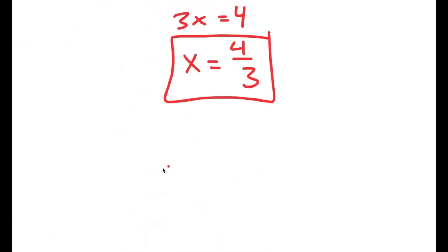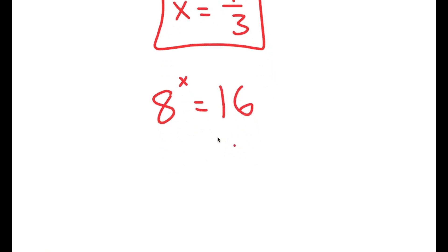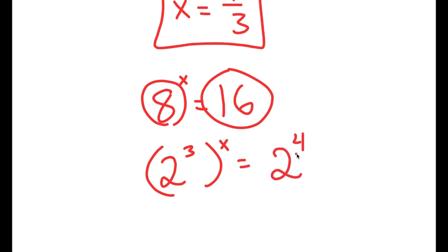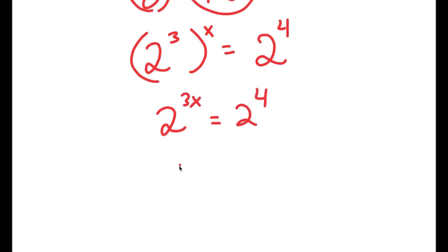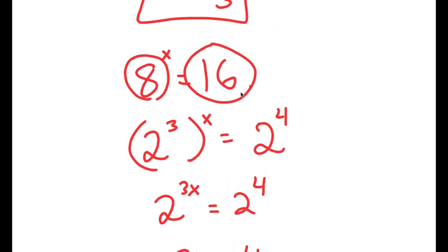There is actually another way to solve this problem. At the start, I can rewrite both sides in base 2. Since 8 is 2 to the power of 3, I get 2 to the power of 3, to the power of x, and 16 is 2 to the power of 4. This simplifies to 2 to the power of 3x equals 2 to the power of 4, meaning 3x equals 4, and x equals 4 over 3. This is a much simpler method.